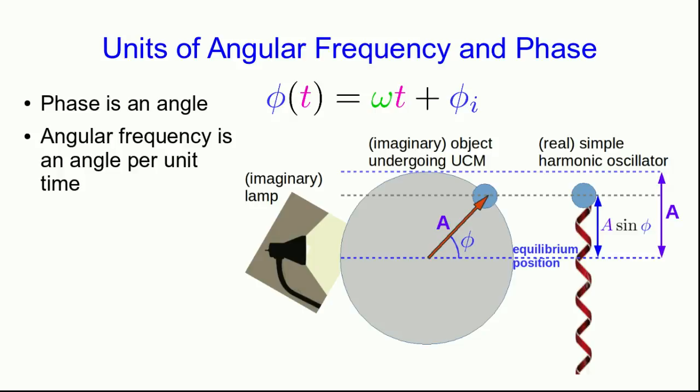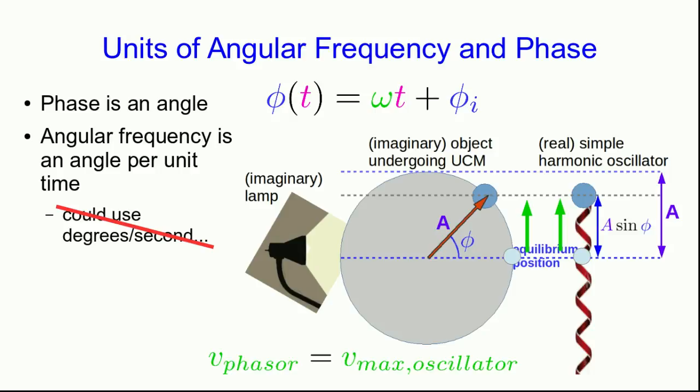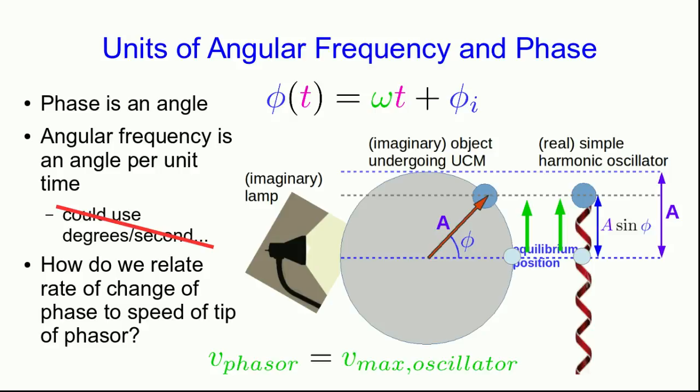The phase phi is an angle, so the angular frequency omega is an angle per unit time. Talking about degrees per second turns out to be inconvenient. When an object in simple harmonic motion passes through equilibrium, it moves at maximum speed, and at that moment the phasor is going through phi equals zero. Since they're moving in the same direction, the speed of the phasor must equal the maximum speed of the oscillator. This gives a relationship between omega and the maximum speed of the oscillator.